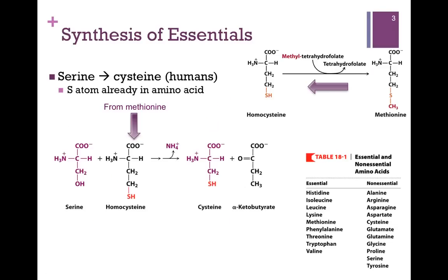Instead, we can make cysteine, but we must have methionine supplied — we cannot make that for ourselves. In a reaction somewhat the reverse of what we just saw, we start with the amino acid methionine, demethylate that to form homocysteine. We combine that with serine, and that will form cysteine. Homocysteine is the donor for the sulfhydryl group that gets added to the side chain of serine and thereby forms cysteine. In the process, homocysteine also becomes deaminated, releasing ammonia, and we form alpha-ketobutyrate.